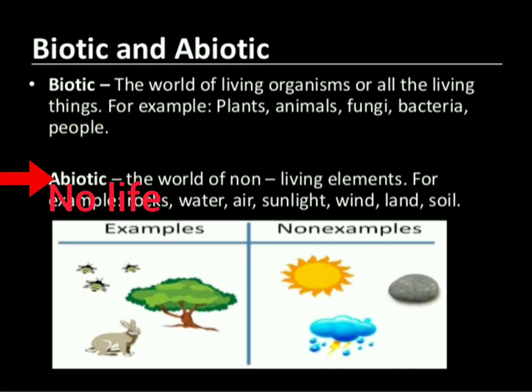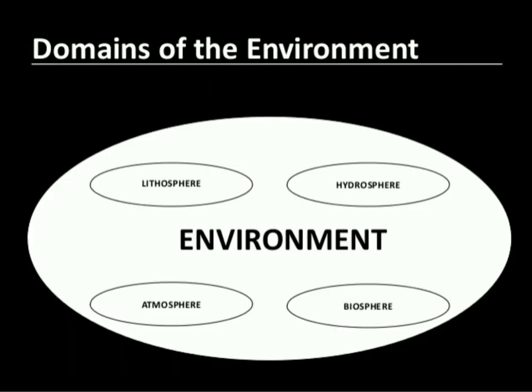Abiotic components — 'abio' means no life. So it includes all non-living elements, for example: land, air, water, sunlight, etc.